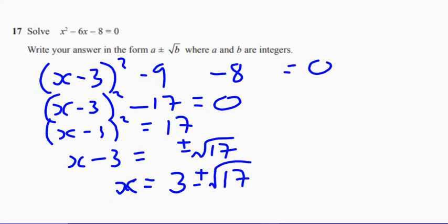That works out quite neatly. We can see that a equals three and b equals 17. Remember, you could use the quadratic formula as well and get the same result.